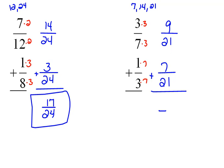So our denominator stays the same of 21. And 9 plus 7 would be 16. So our answer here now is 16 over 21.